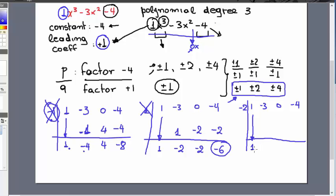You bring down the 1, multiply by negative 2, add here, the result is negative 5. Negative 5 times negative 2, the result is 10. And so on, the result is negative 24.